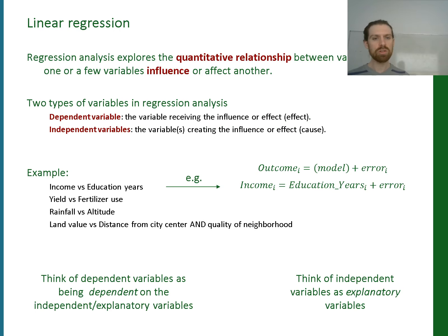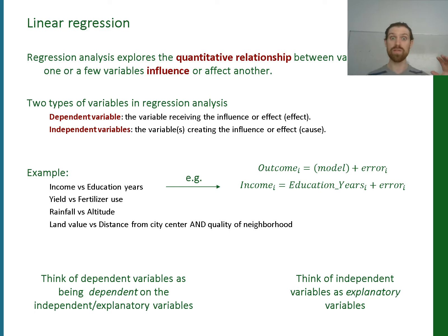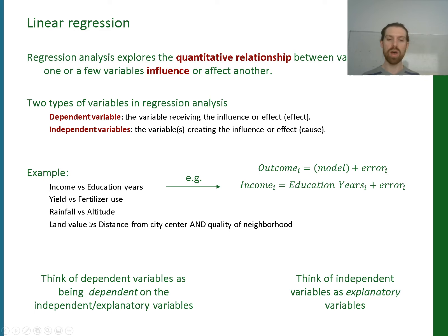So linear regression analysis explores quantitatively the relationships between variables when one or multiple variables actually influence and affect another. We have to then specify those dependent and independent variables. For example, we could have land value as the Y variable — the outcome — and then try to understand the degree to which distance to the city centre and quality of the neighbourhood may influence that. You could do that with altitude and degree of rainfall, the amount of fertilizer used and yield, or the amount of education you have and the income you earn. Generally, we would expect that the more time you spend in education, the higher your income is going to be. There's definitely variation there — an error component — but there'll be a trend that overall is probably a positive correlation.